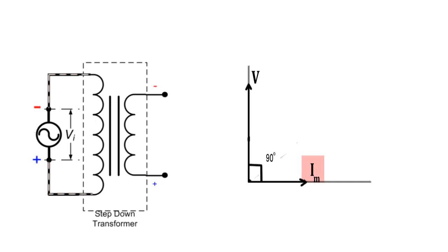The magnetizing current IM always lags the applied voltage by 90 degrees, and the core loss component IC is always in phase with the applied voltage.